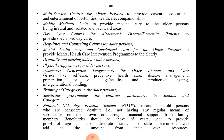Additional programs include: daycare centers for Alzheimer's disease and dementia patients providing specialized daycare; helplines and counseling centers for older persons; mental health care and specialized care for older persons; disability and hearing aids for older persons; physiotherapy clinics; and awareness generation programs for older persons and caregivers covering self-care, preventive health care, disease management, preparation for old age, healthy and productive aging, intergenerational bonding, and training for caregivers.